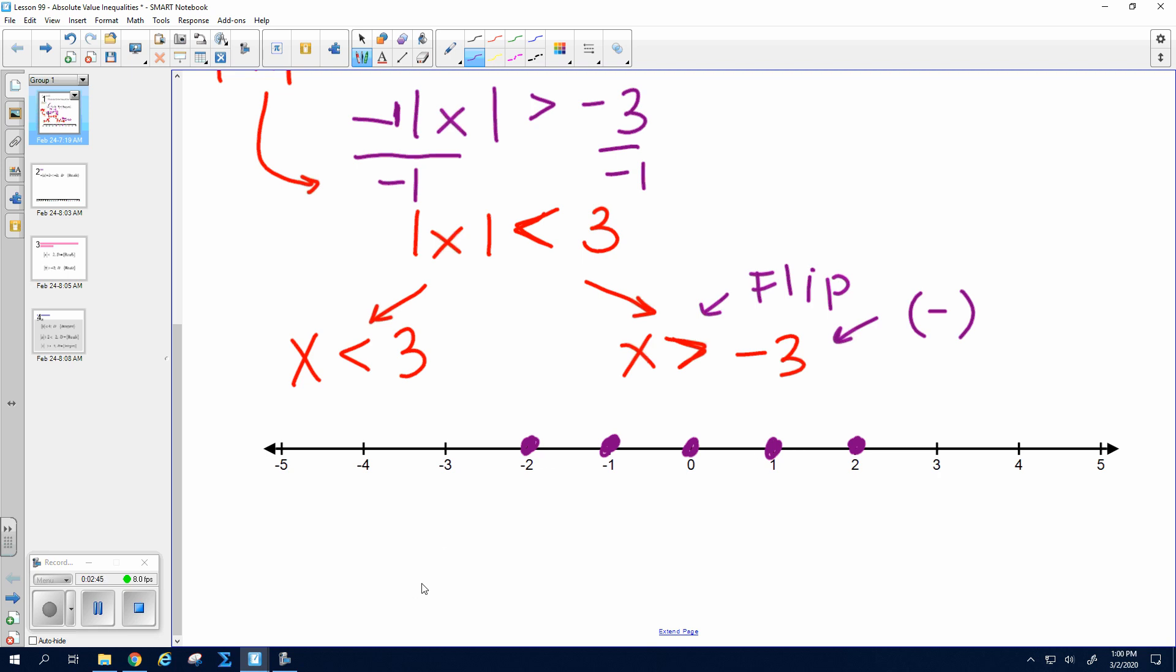All right. What kind of graph is this? This is an and graph, because I shaded in between two numbers. If it's an and graph, you want to write it as a conjunction. Negative 3 is less than x is less than 3. Only when it's an and graph do you have to write it as one statement like this.